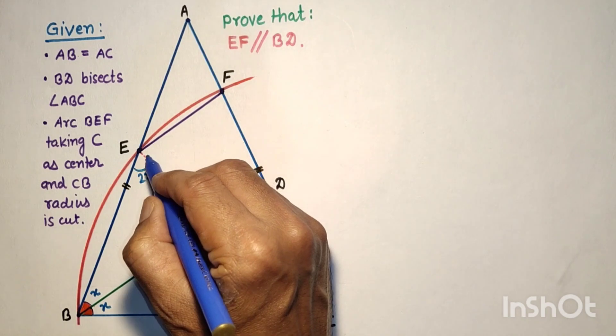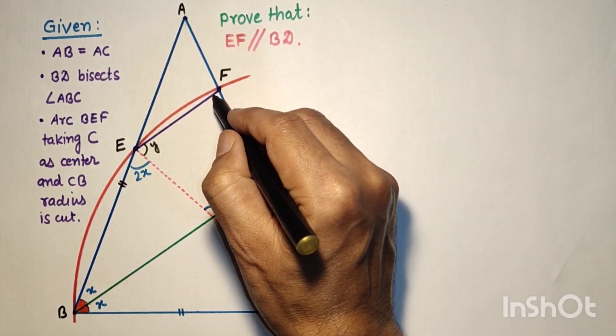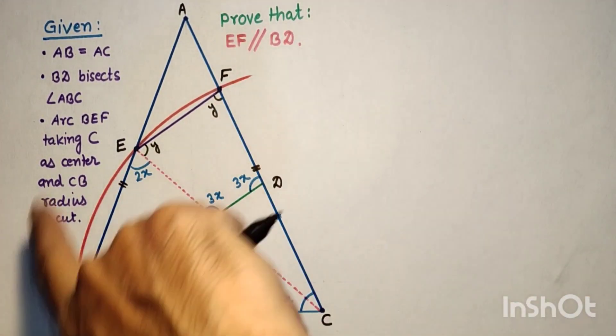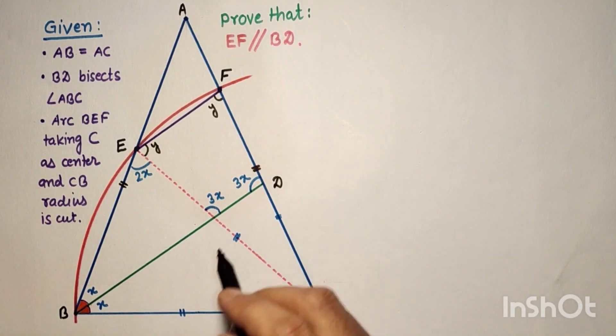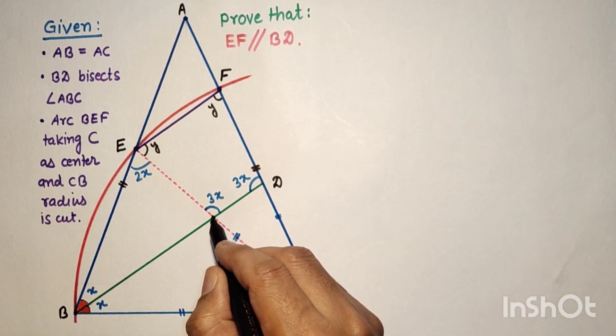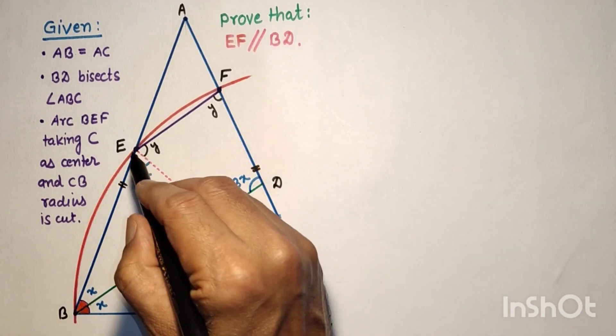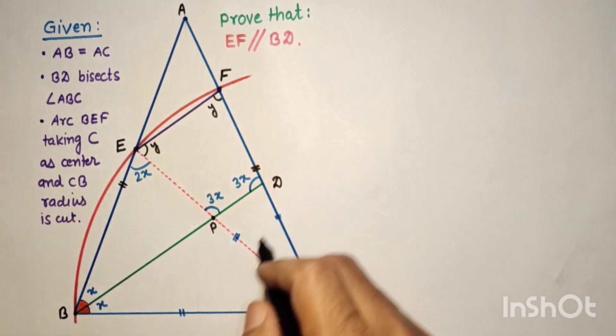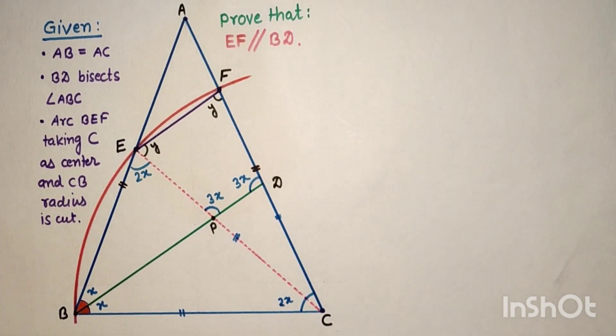If this angle is Y, then this will be Y because CE equals CF, same radius arc. Now EFDP is a quadrilateral, and the sum of the interior angles of a quadrilateral will be 360 degrees.